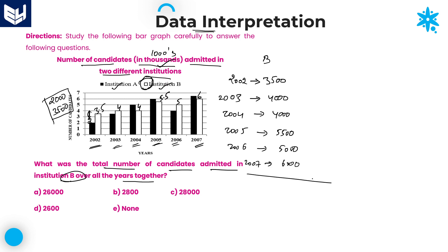Now add all the values together. The last two digits are zeros, so look at the hundreds place: 5 plus 5 is 10, carry 1. Then 3 plus 4 is 7, plus 4 is 11, plus 10 is 21 — giving 27, then 28. The total is 28,000. So over all the years together, the value is 28,000, which is Option C — the right answer.